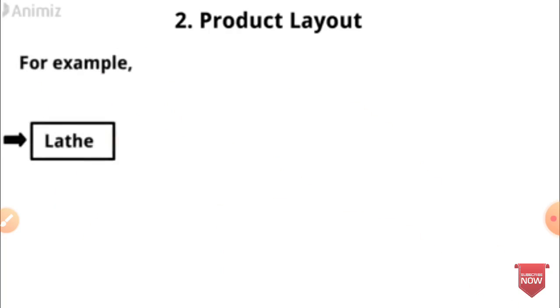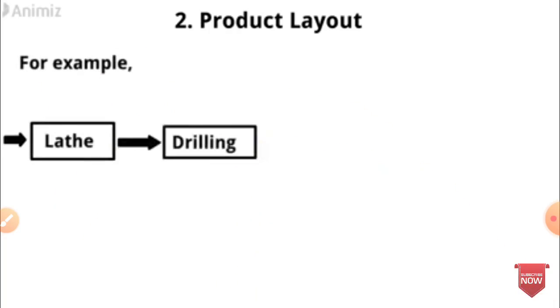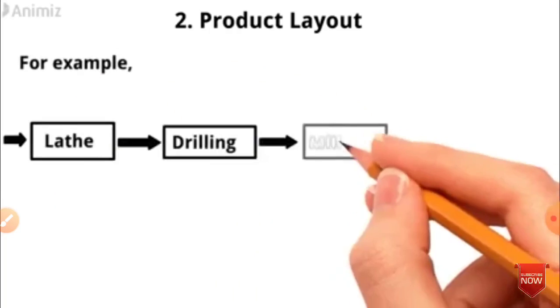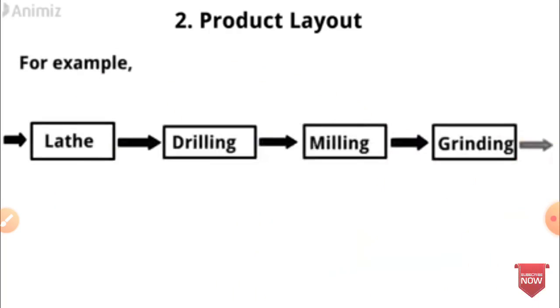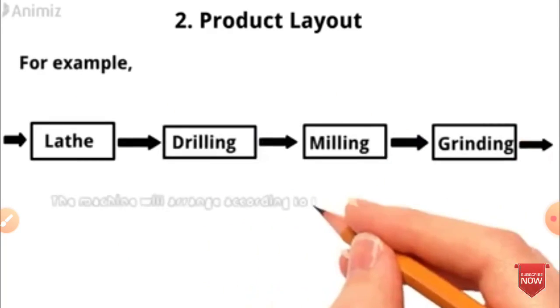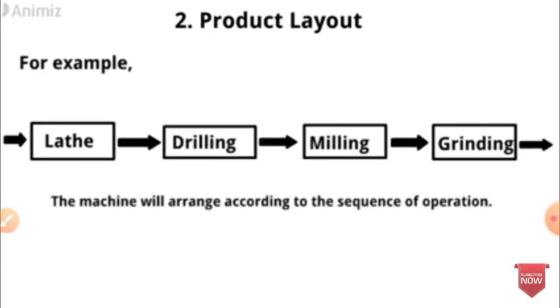For example: Lathe machines, Drilling machines, Milling machines, Grinding machines — the machines are arranged according to the sequence of operations.